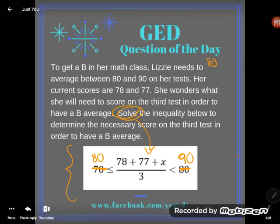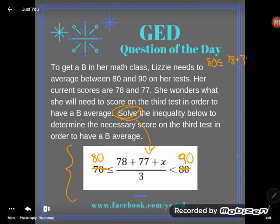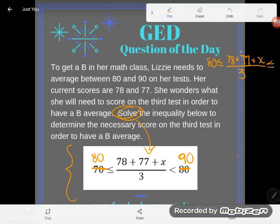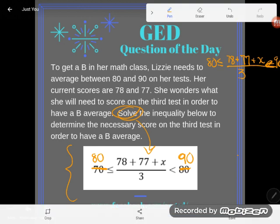Let's come over to the side here to give ourselves some room. I'm going to copy this down. So it says 80 is less than or equal to 78 plus 77 plus some unknown test score, all divided by 3. See how that's an average right there? If you total a list of numbers and divide by the number of items in your data set, you'll have an average.